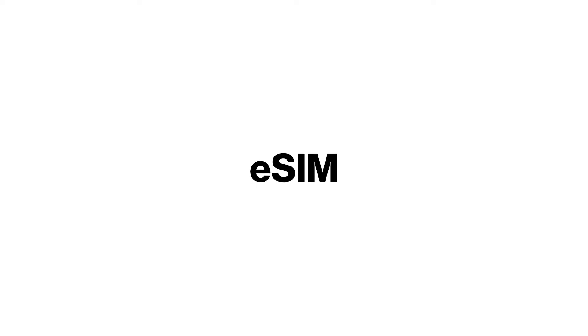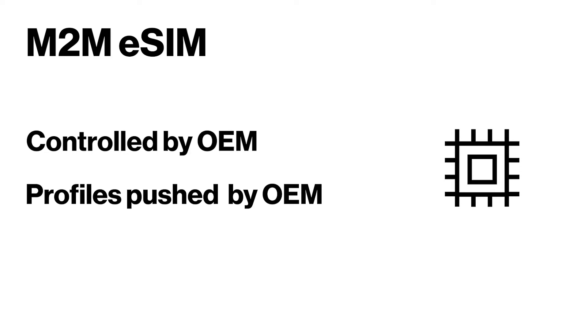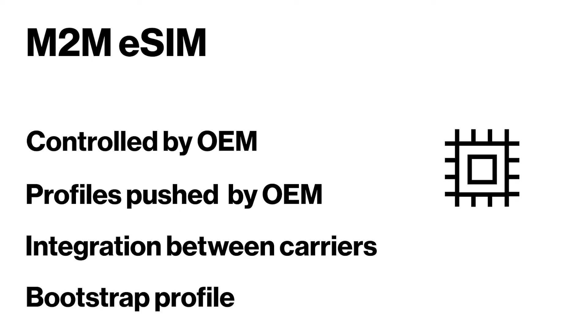Verizon offers two flavors of eSIM: M2M and Consumer. With the M2M solution, it is controlled by the OEM, profiles are pushed by the OEM, integration is required between carriers, and a bootstrap profile is required.